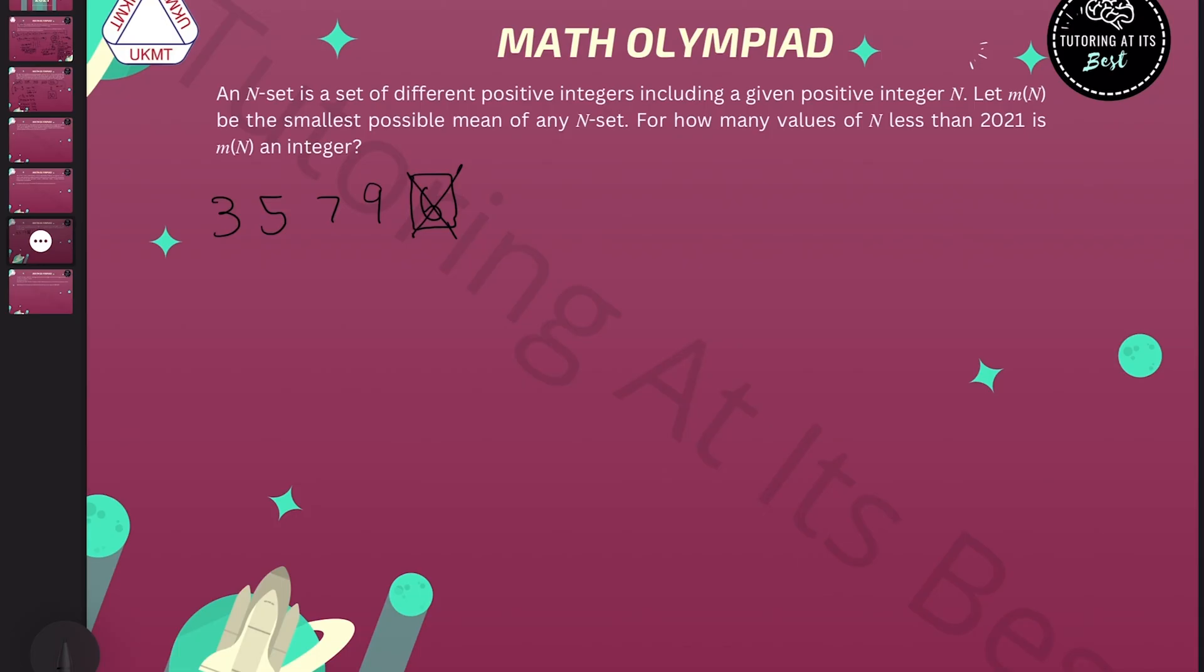But if I remove a number smaller than the mean, like three for example, then the mean will go up. If I had removed something bigger than the mean, then the mean would go down. These are all useful things to remember later in the problem.